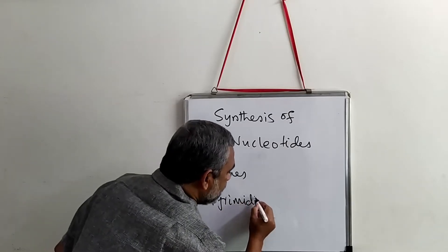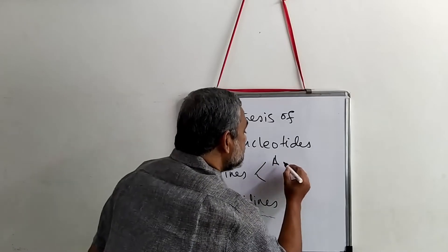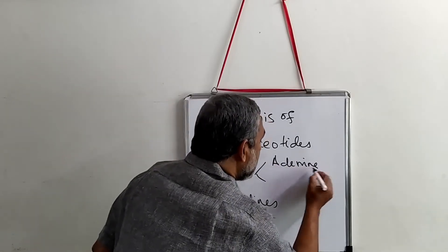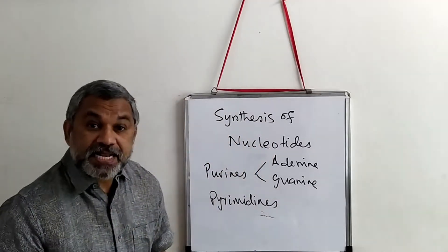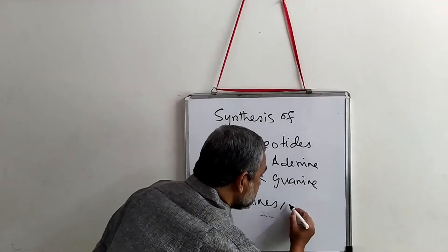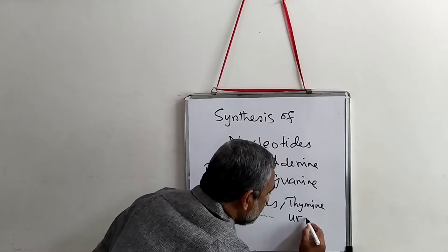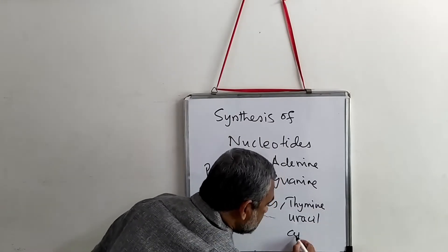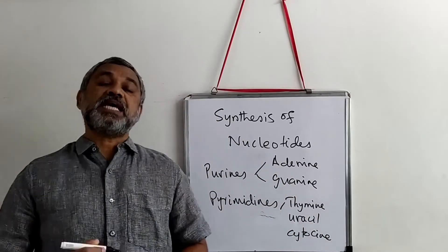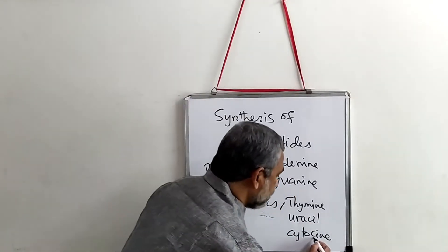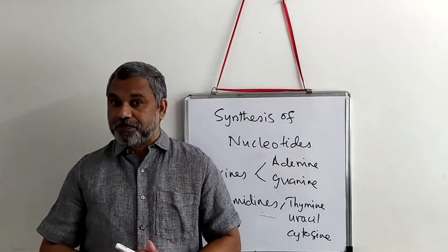There are two purines: adenine and guanine. There are three pyrimidines: thymine, uracil, and cytosine. These are the five different bases.